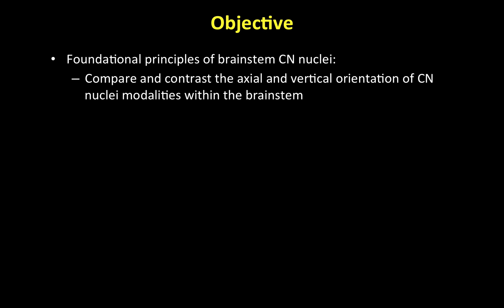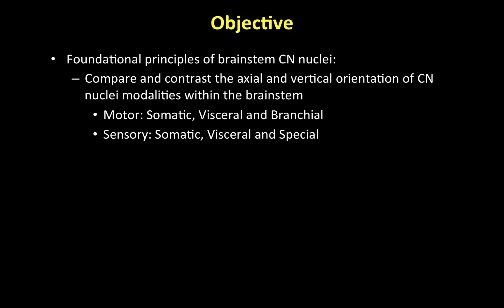We're going to compare and contrast the axial side-to-side and vertical up-and-down orientation of cranial nerve nuclei modalities within the brainstem. There are six different modalities: three motor — somatic motor, visceral motor, and branchial motor nuclei — and three sensory — somatic sensory, visceral sensory, and special sensory nuclei.